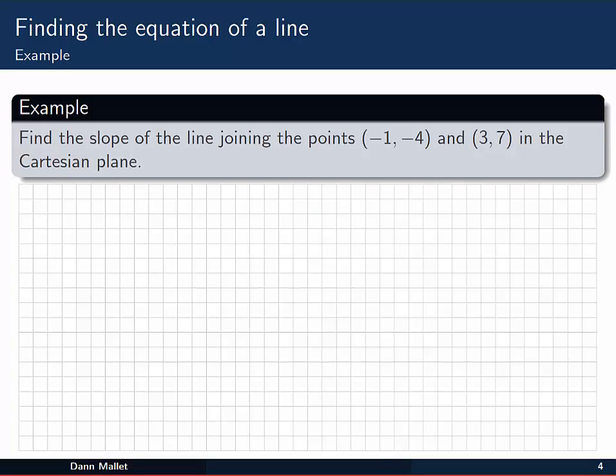Let's have a look at this example. We want to find the slope of the line that joins the points in the Cartesian plane. Well, remember, we don't actually need to know what the line is. We just need to know that m is equal to y₂ minus y₁ divided by x₂ minus x₁.